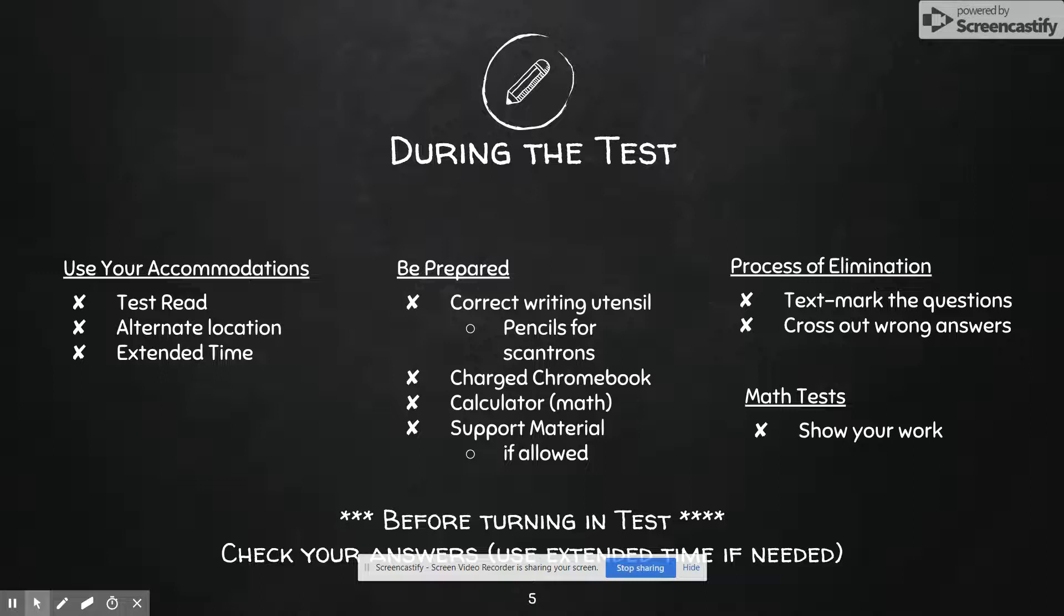For a math test, always show your work. And here's why. A lot of times math teachers will give you credit if you have your work there, even if the answer is wrong, because they're at least being able to see your process and see where you maybe have the miscalculation. And they could give you partial credit for that versus losing all of it.